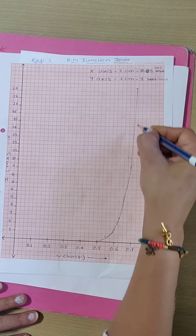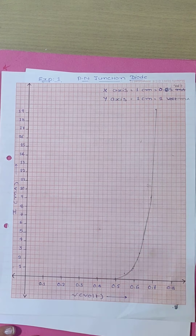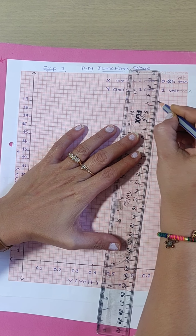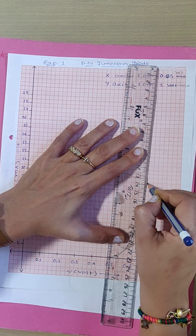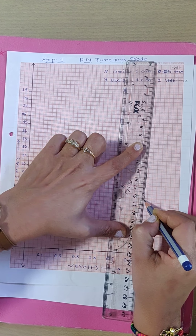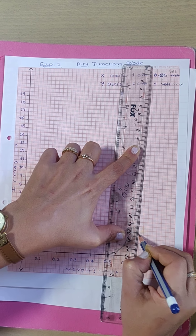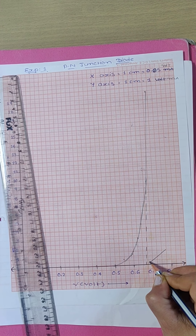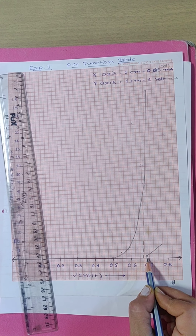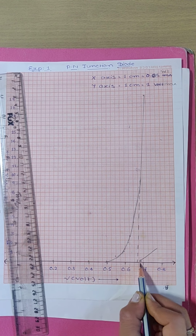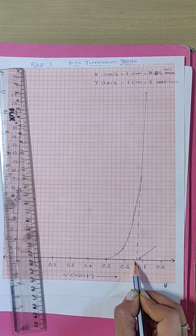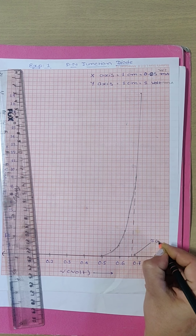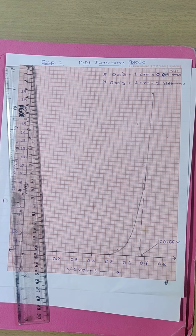So now this is the final graph of a P-N junction diode, showing a curve-type characteristic. Now I have to extend the straight line back on the x-axis using a dotted line. Wherever it touches the x-axis, that voltage is known as the cut-in voltage of the diode. Here it is in between 0.6 and 0.7, approximately 0.66 volt.